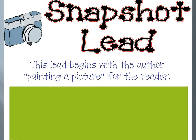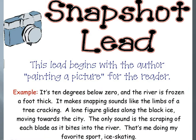Next up we have the snapshot lead. If you've ever played with a camera, you know it can zoom in and zoom out. A snapshot lead zooms in very closely and gives rich, descriptive images — it begins with the author painting a picture for the reader. Here's a student example: 'It's 10 degrees below zero and the river is frozen a foot thick. It makes snapping sounds like the limbs of a tree cracking. A lone figure glides along the black ice moving towards the city. The only sound is the scraping of each blade as it bites into the river. That's me doing my favorite sport, ice skating.'